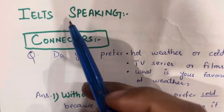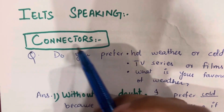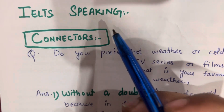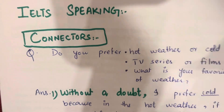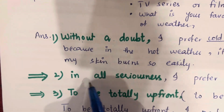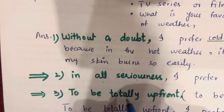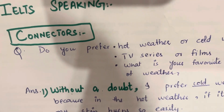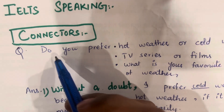In this video we are going to talk about connectors in IELTS speaking. What are connectors? Look at some of these examples: 'without a doubt', 'in all seriousness', 'to be totally upfront'. These are connectors.